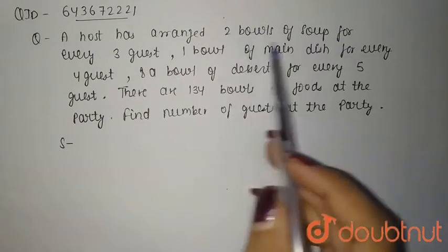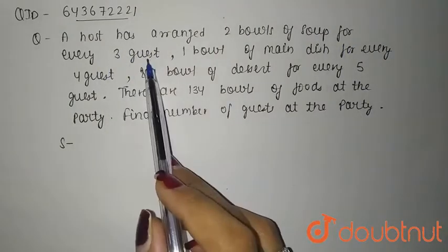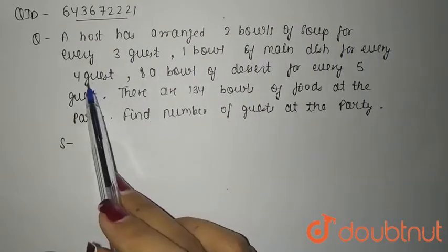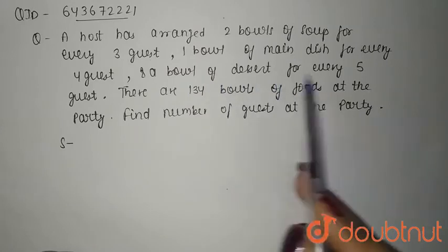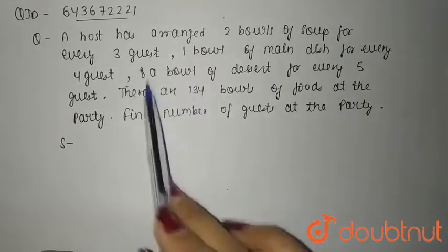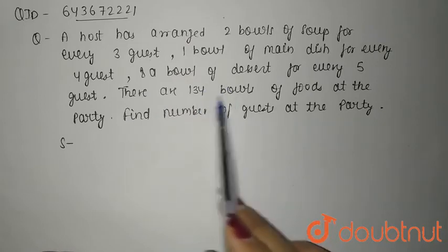Hello everyone, so our question is: A host has arranged two bowls of soup for every three guests, one bowl of main dish for every four guests, and a bowl of dessert for every five guests. So there are three types of classification.